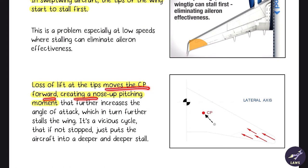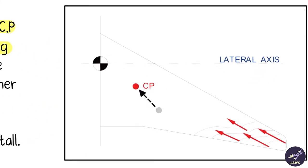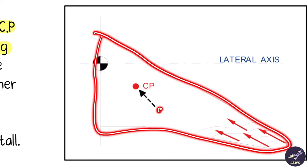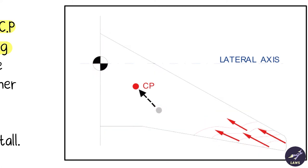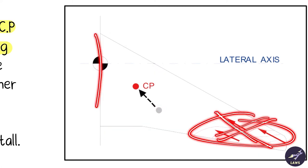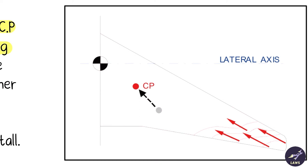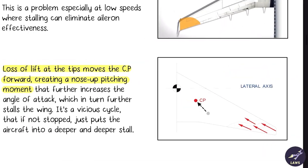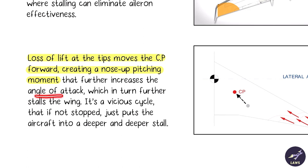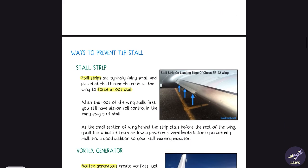Earlier the whole wing area was contributing and the CP was centered across the span. As the tip area is rendered ineffective, only the inner portion remains, so CP moves forward. With CP moving forward after the stall, the aircraft's pitch keeps increasing, increasing the angle of attack further and stalling the wings more — a vicious cycle. There are various ways to prevent this tip stall.